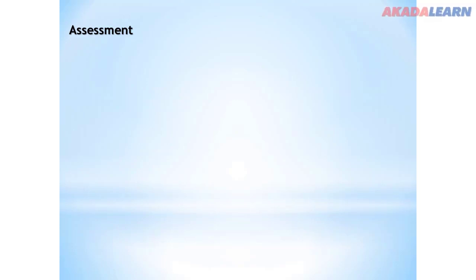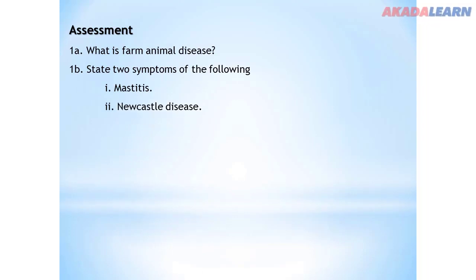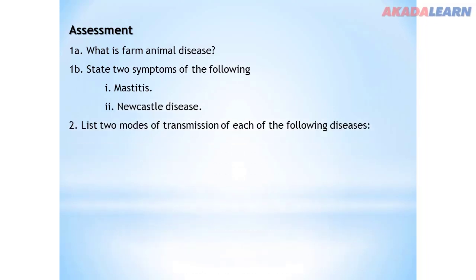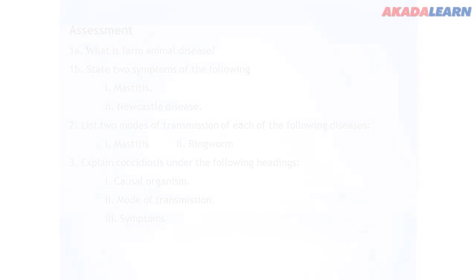Thank you for being here today. Please take the following assessment. Number one: What is farm animal disease? Number two: State two symptoms of each of the following — mastitis and Newcastle disease. List two modes of transmission of mastitis and ringworm. Question number three: Explain coccidiosis under the following headings — causal organism, mode of transmission, and symptoms.